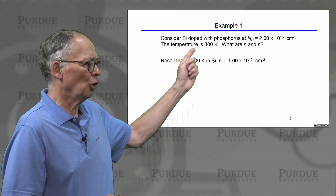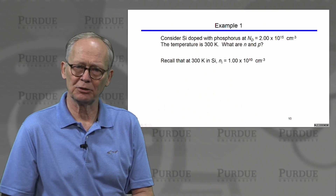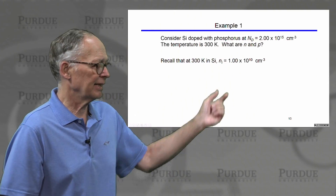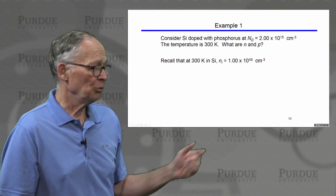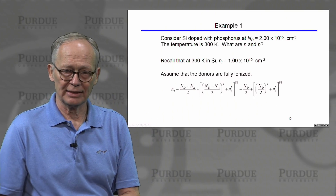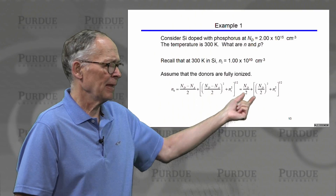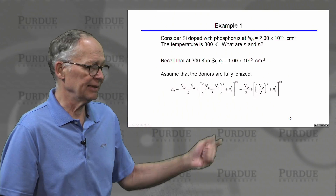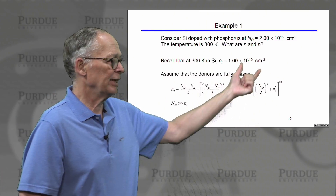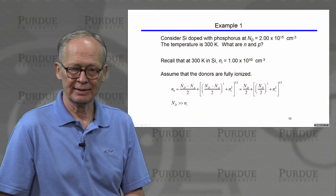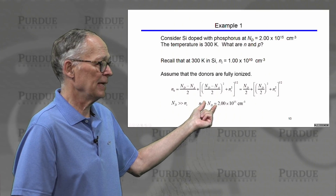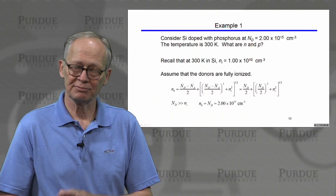Let's do an example: silicon doped with phosphorus at a concentration of 2×10¹⁵ per cubic centimeter — a fairly light doping — at 300 K, so the dopants are fully ionized. We want the electron and hole concentrations. At 300 K, n_i is about 1×10¹⁰ per cubic centimeter. Since N_D (2×10¹⁵) is much larger than n_i (1×10¹⁰), we can ignore the n_i² term. The equation becomes very simple: the electron concentration is just equal to the donor concentration, 2×10¹⁵ per cubic centimeter.